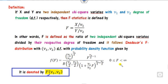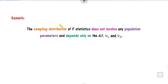If you closely look at this function, everywhere mu 1 and mu 2 appear. The first important remark is that the distribution of the statistic does not involve any population parameters, and it depends only on the degrees of freedom of x and y.